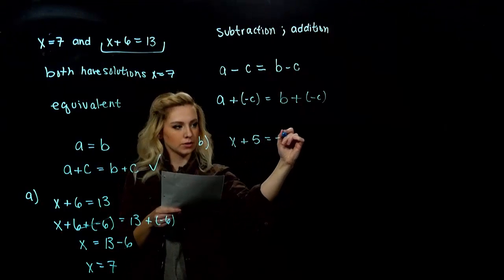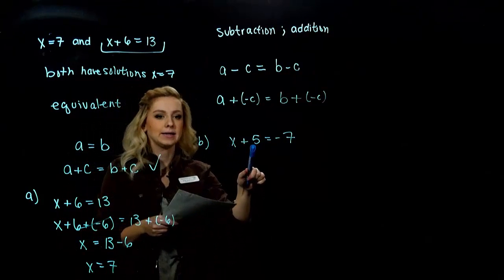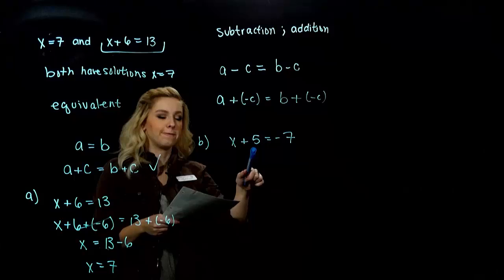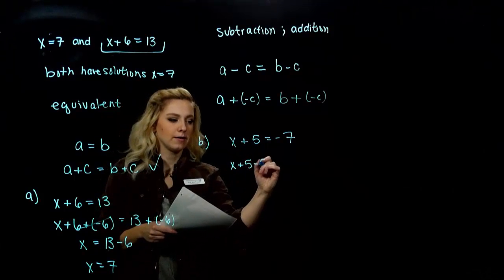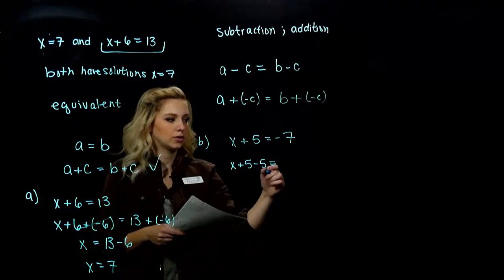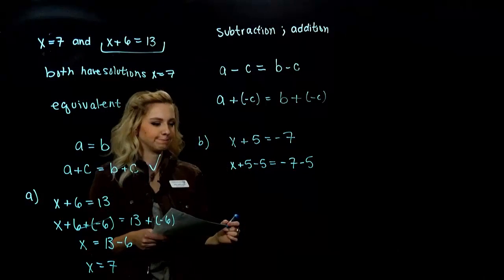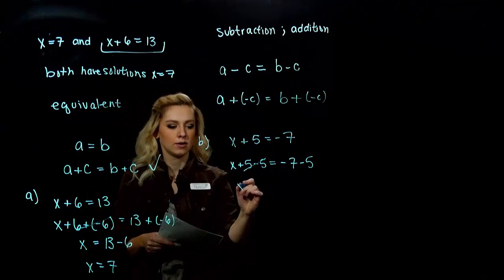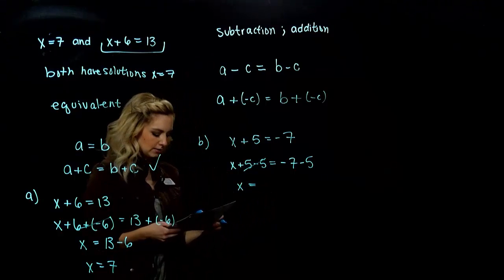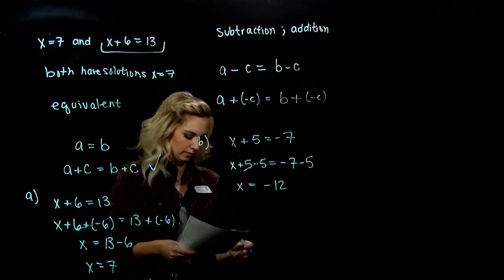We want to solve for x. So, I'm trying to get this thing on its own. I need to get rid of 5. So, what do I have to do over here? I need to subtract 5. But, whatever I do to one side, I also have to do to the other. So, adding the opposite, those are going to cancel. We're just left with x. And, on the right, how many negatives do we have? Negative 12, all together.